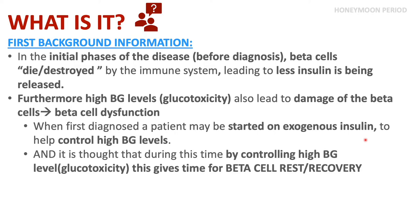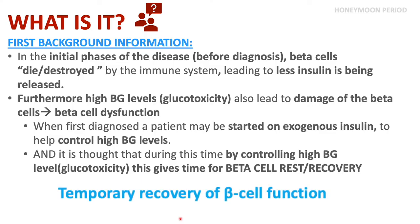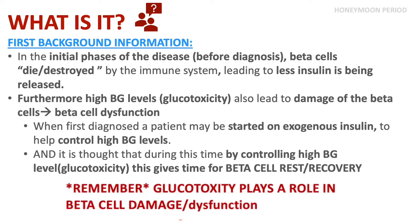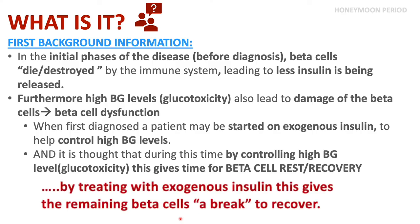When exogenous insulin is given, it is thought that by controlling the high glucose levels — or glucotoxicity — this gives the beta cells time to rest or recover. You can think of it as a temporary recovery for the beta cells. Remember, glucotoxicity plays a role in beta cell damage and dysfunction.